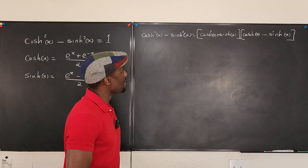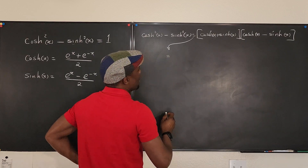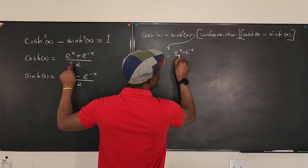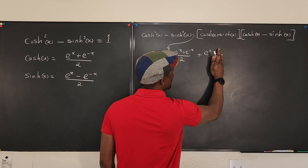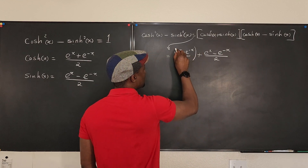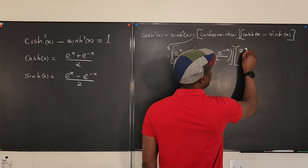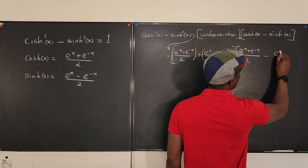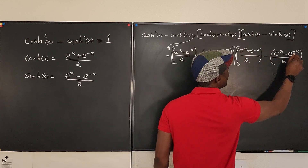Let's see what that gives us. Substituting the definitions: cosh x plus sinh x becomes (e^x + e^{-x})/2 plus (e^x - e^{-x})/2, and cosh x minus sinh x becomes (e^x + e^{-x})/2 minus (e^x - e^{-x})/2.